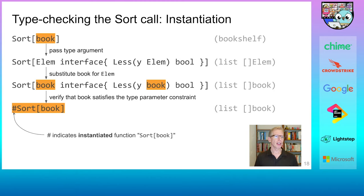As a result of this instantiation step, the compiler creates a new internal function, here marked with a hash. This new function is not generic anymore, and its ordinary parameter is just a slice of books.